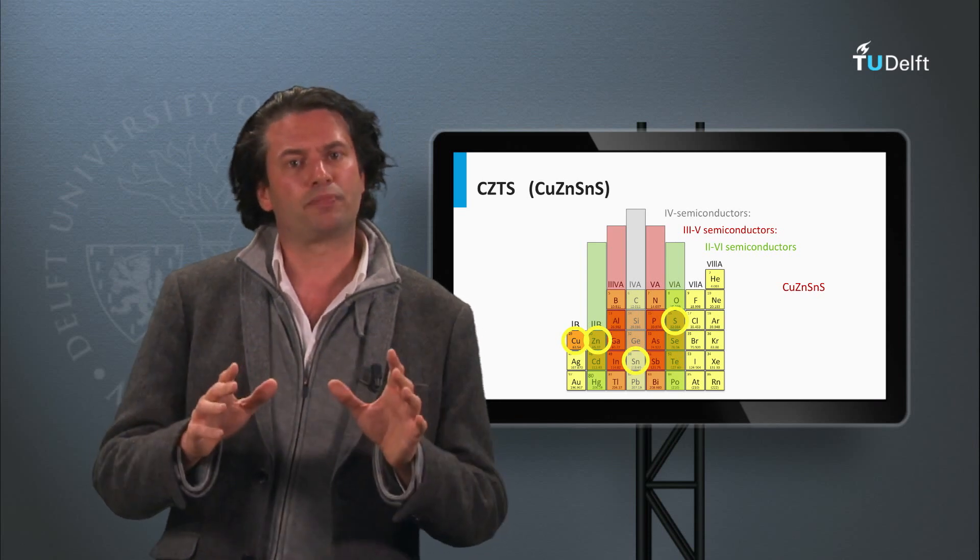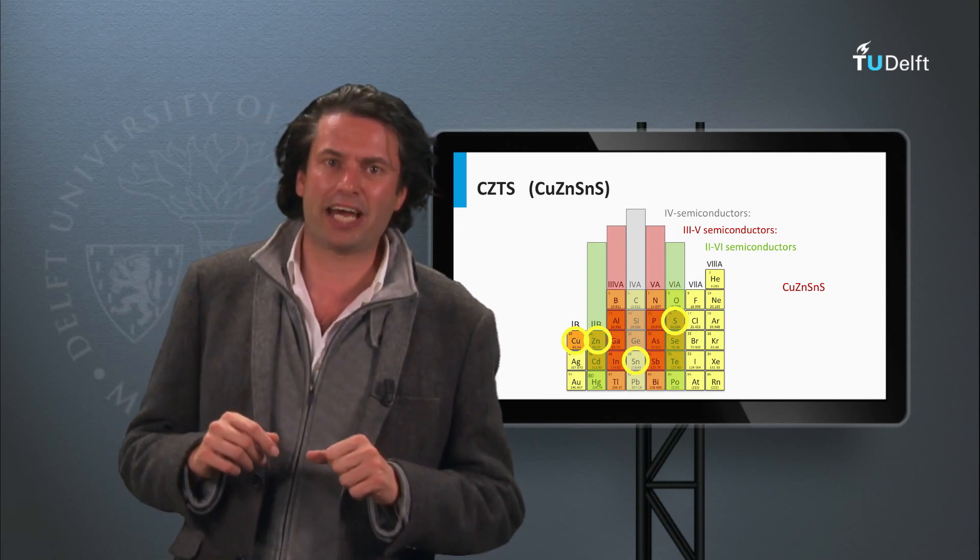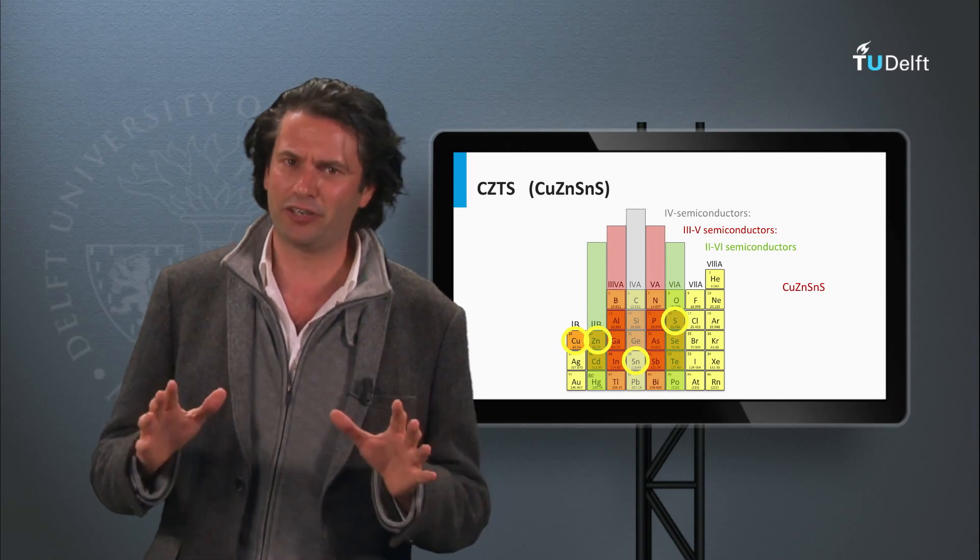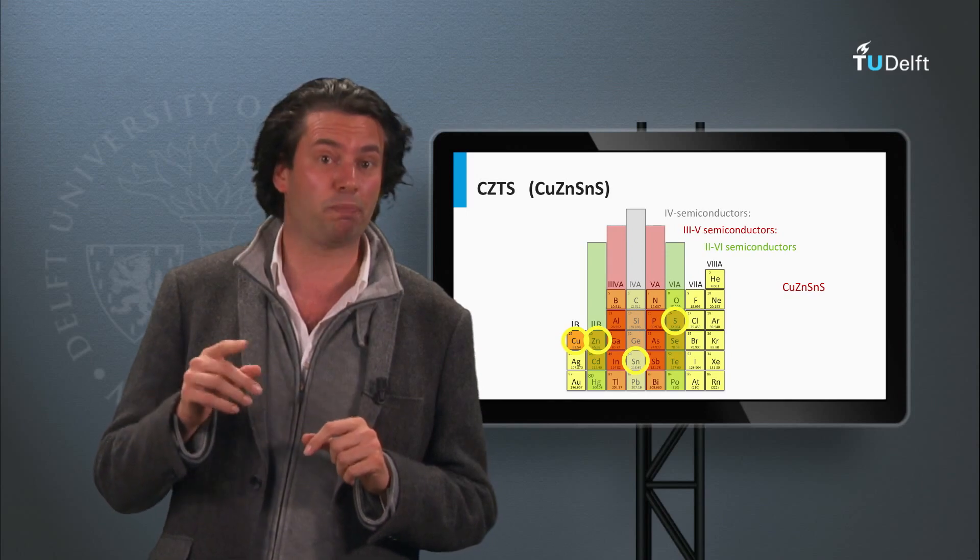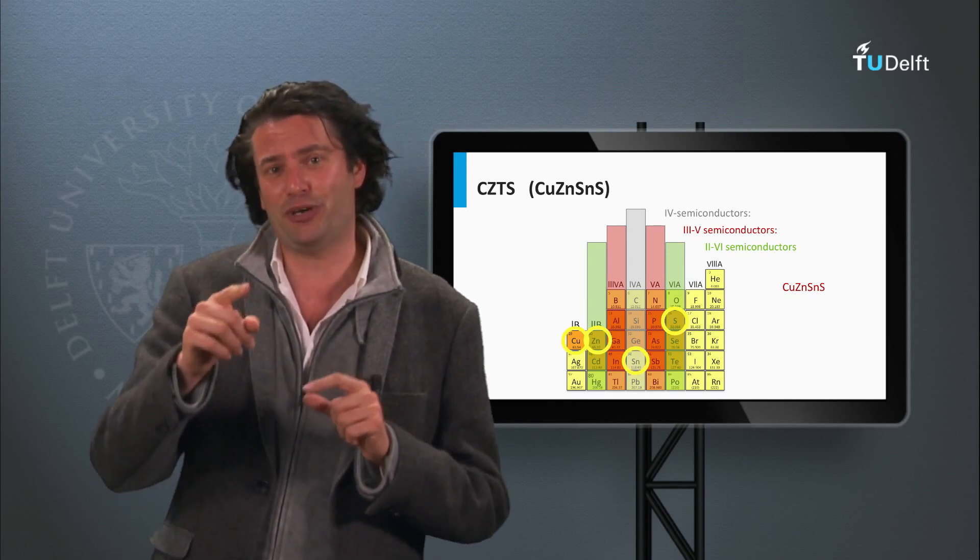In the next block, we will discuss the thin-film cadmium telluride PV technology. This is a PV technology which has currently the lowest demonstrated cost price per watt peak. See you in the next block.